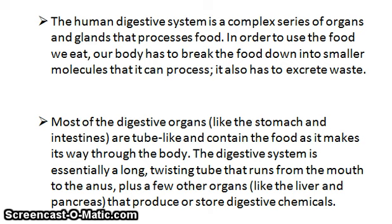It also has to excrete waste. Most of the digestive organs, like the stomach and intestines, are tube-like and contain the food as it makes its way through the body. The digestive system is essentially a long, twisting tube that runs from the mouth to the anus, plus a few other organs like the liver and pancreas that produce or store the digestive chemicals.